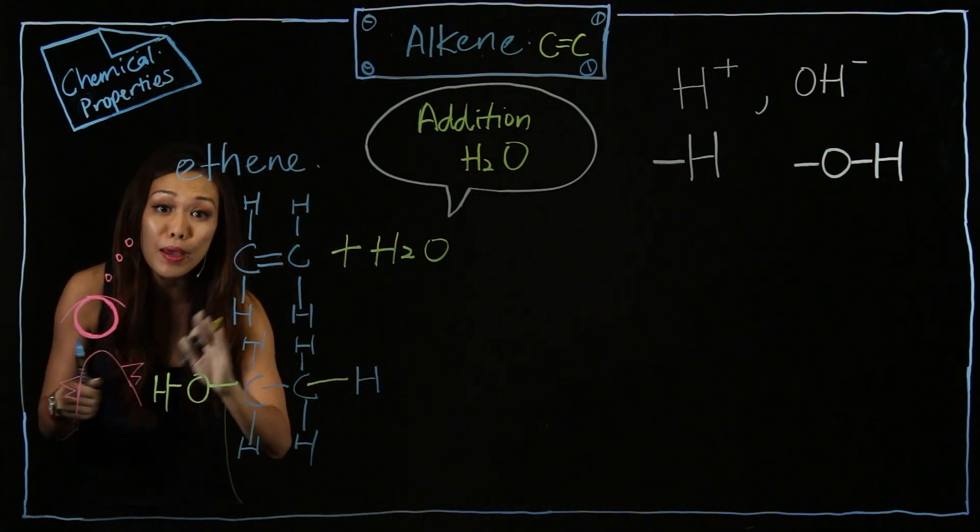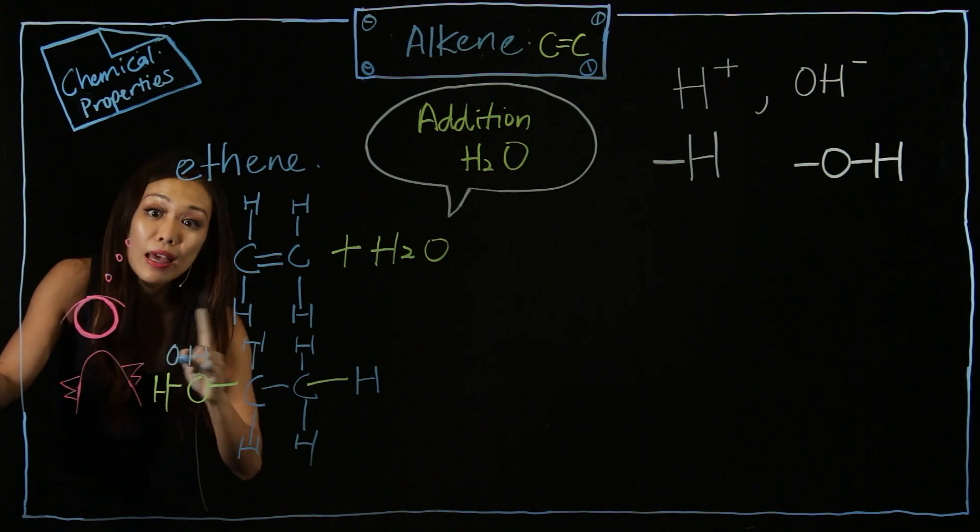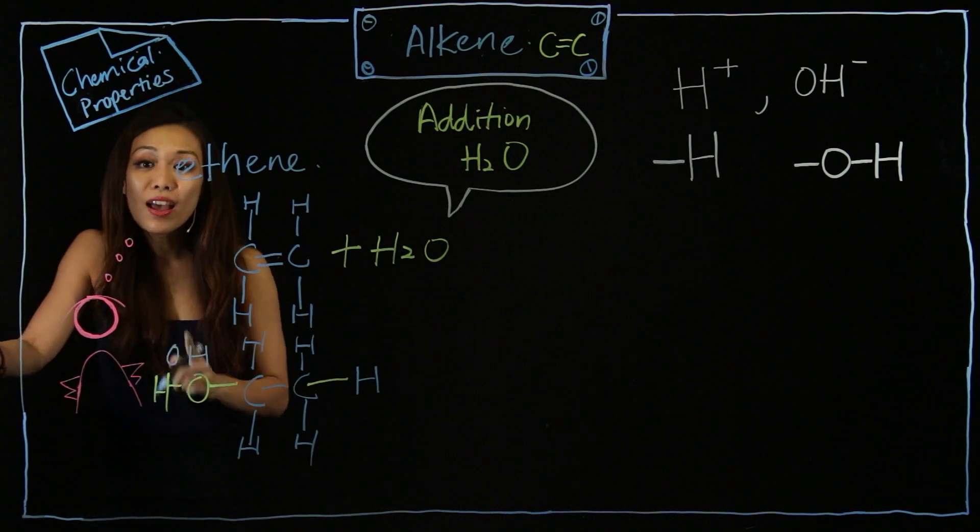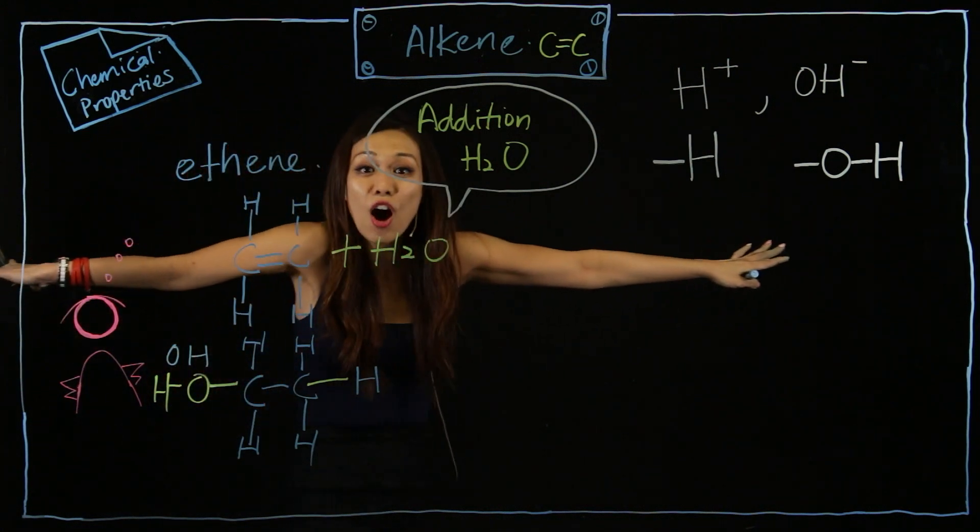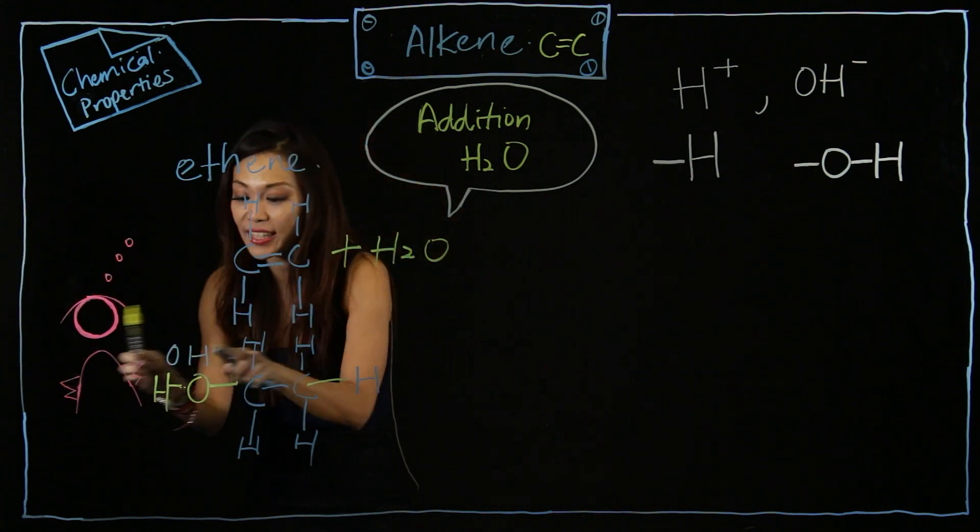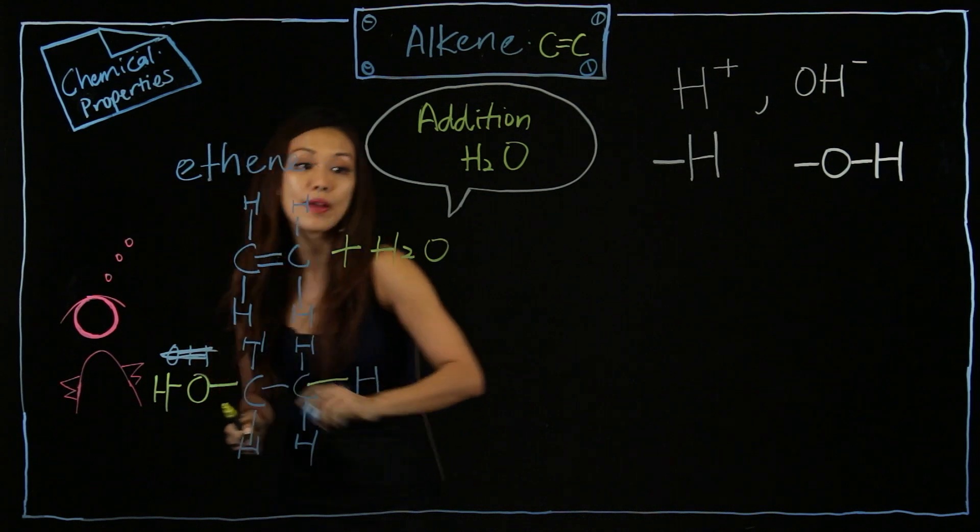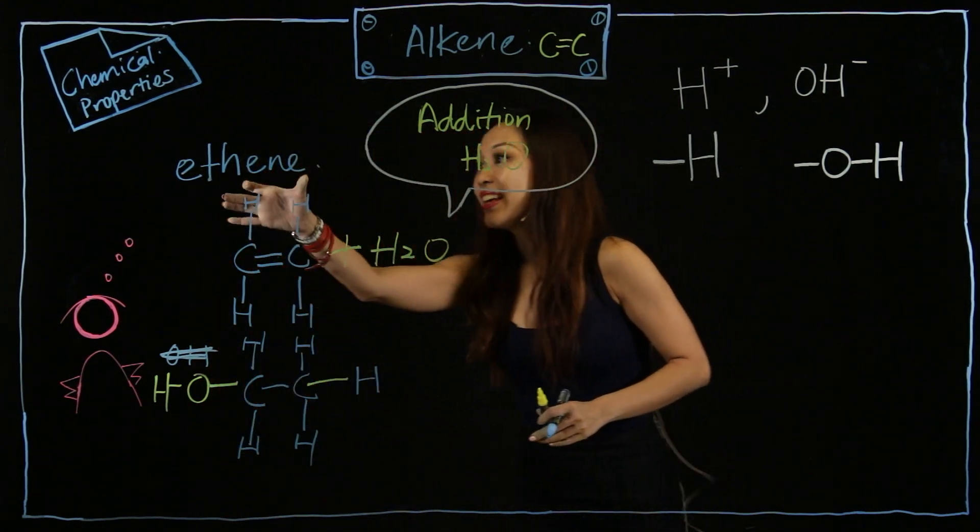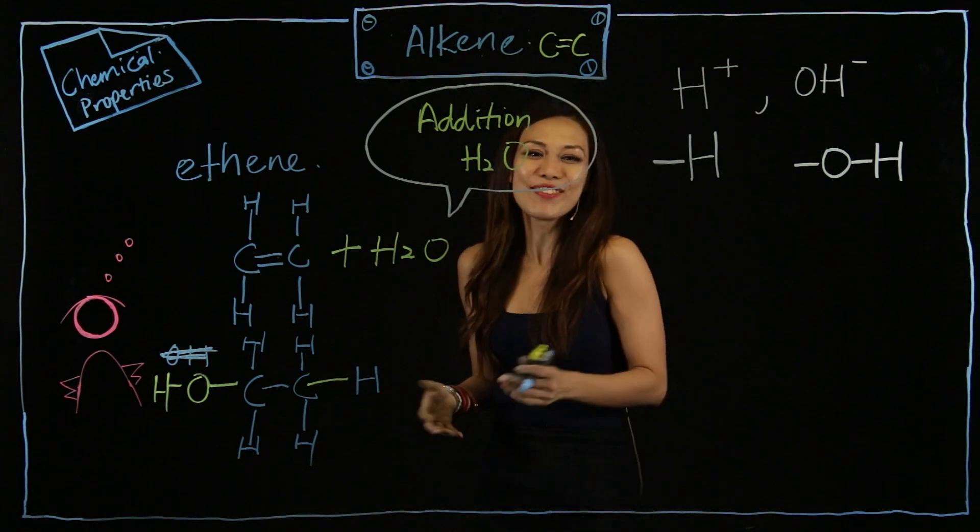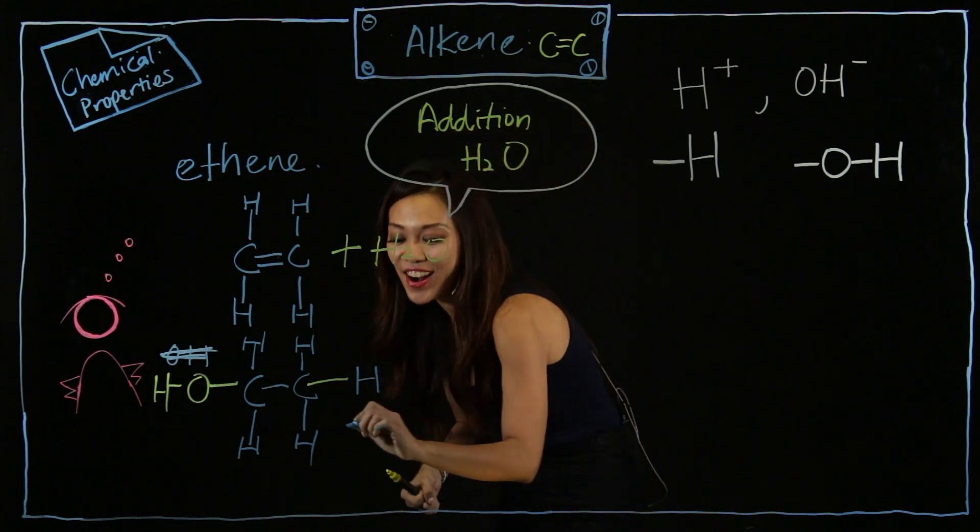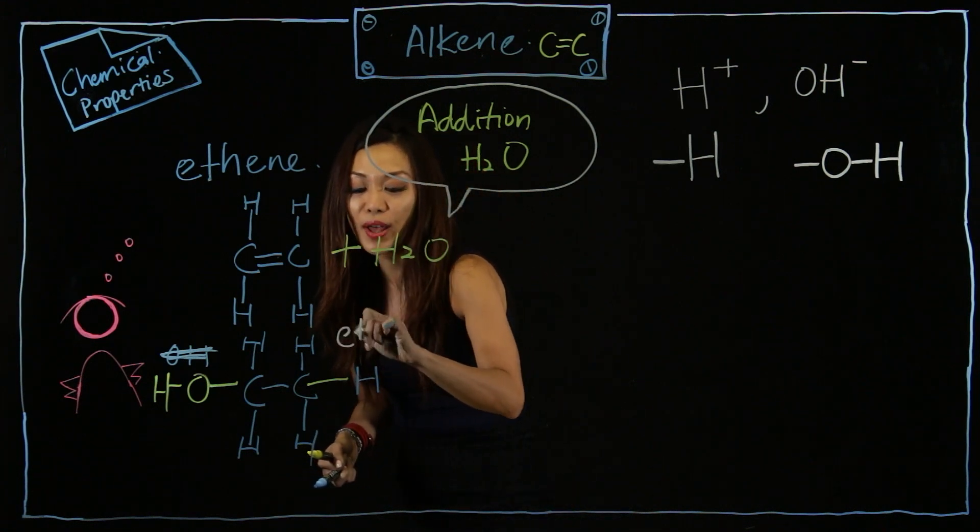So if you write, if you make a mistake, instead of writing OH here, you write HO, it doesn't make sense. Why? Because hydrogen is not the one with the two legs, you see. It's the oxygen with the two legs that is extending out. So please be careful about this. So I'm going to clean this away. And ethene plus water, OH. What is this called? Hey, we are moving on to alcohol. So this is actually called ethanol.